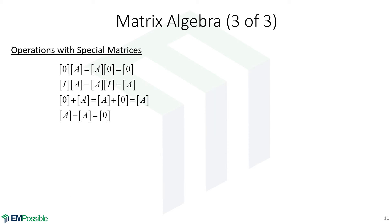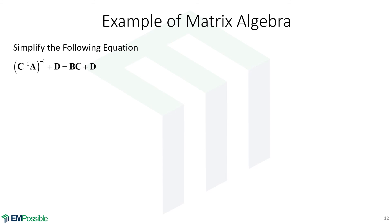Operations with special matrices. Any matrix times the zero matrix equals the zero matrix, whether pre- or post-multiplying. Pre- or post-multiplying with the identity matrix gives the original matrix back. Adding the zero matrix to any matrix gives that matrix back. Any matrix minus itself gives the zero matrix. Let's practice this with an example — let's simplify an equation.